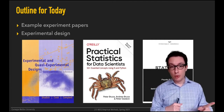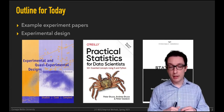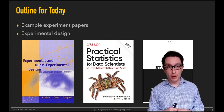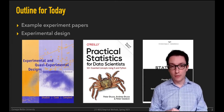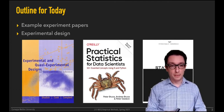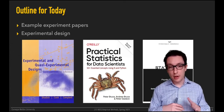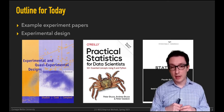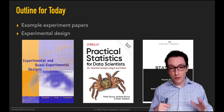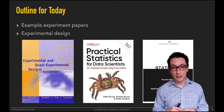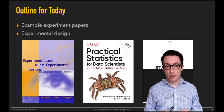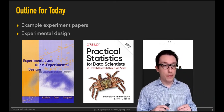One recommended book is a very digestible statistics textbook — you'll find the reference in the slide deck — that communicates just the intuition behind statistical analysis techniques without equations. The other book, the 'crab book,' is much more practical and applied, taking a data scientist's perspective on statistics. It has lots of examples of how to implement and run analyses in both R and Python, which is great for the kind of empirical research you'll be doing.